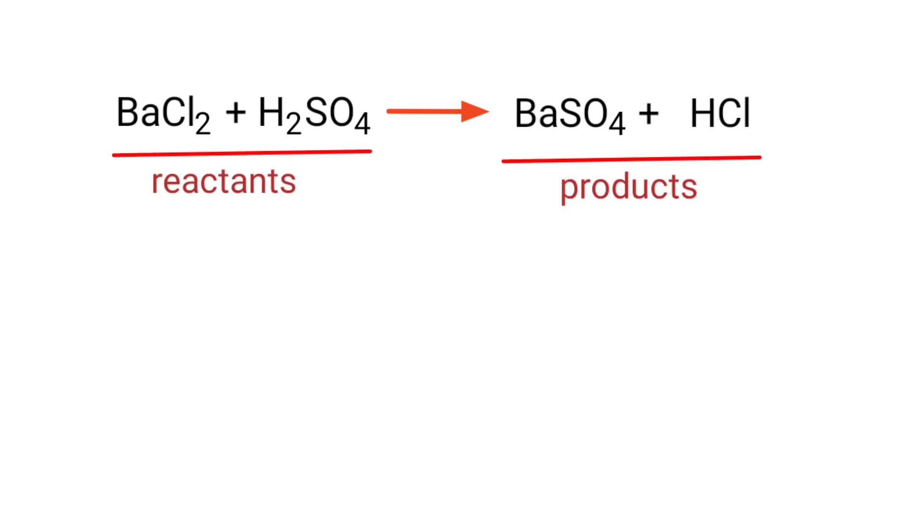In this equation, the reactants are barium chloride and sulfuric acid, and the products are barium sulfate and hydrogen chloride.